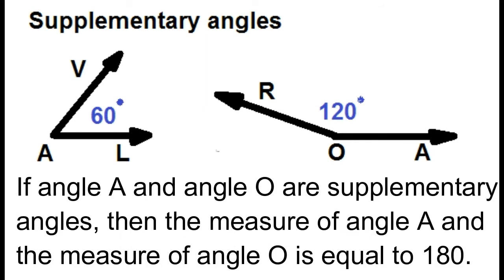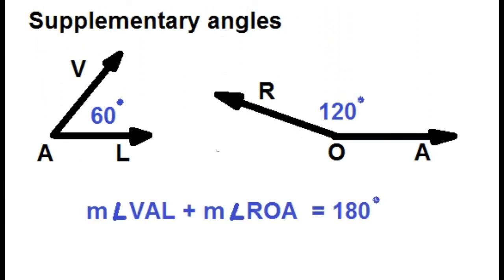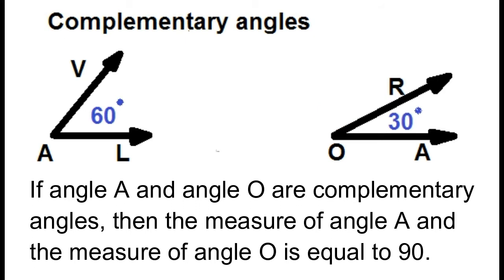If angle A and angle O are supplementary angles, then the measure of angle A plus the measure of angle O is equal to 180 degrees. If angle A and angle O are complementary angles, then the sum of their measures is equal to 90 degrees.